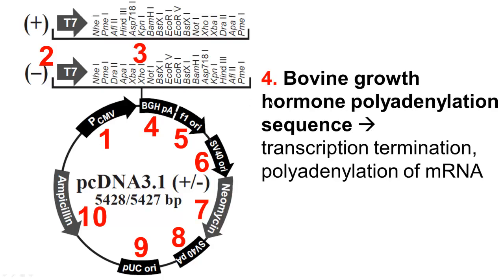Next, number four is BGHPA, right after the multiple cloning site. This stands for bovine growth hormone polyadenylation sequence. Since we have a promoter — our pCMV — and then a gene of interest, we also need a termination sequence. This basically ends the transcription and polyadenylates our messenger RNA to form the stable, mature messenger RNA ready for translation.